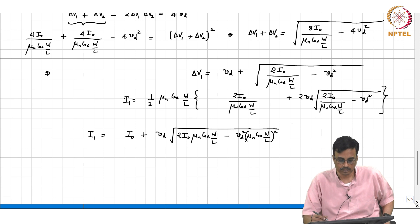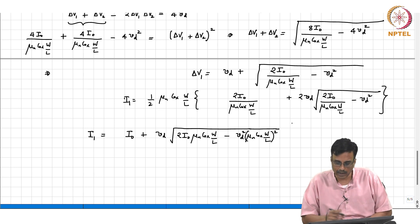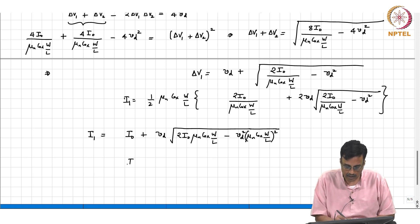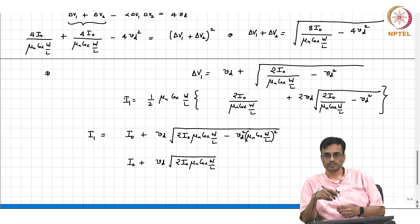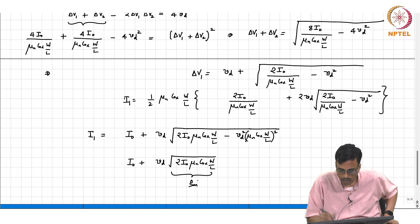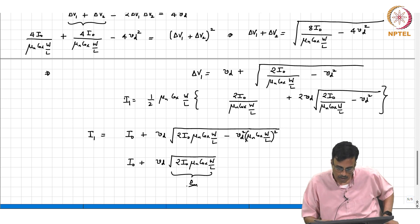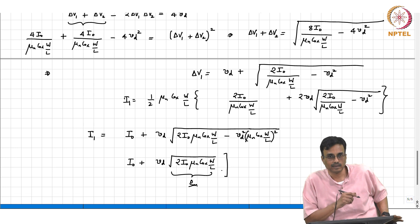Sanity check: Vd equals 0 gives I naught, right. What else can we do? For small Vd, which term can you neglect? You can neglect the Vd square. For small Vd we should get I naught plus Vd times something. What we actually get is this mu n Cox W by L, and why does this make sense? This is nothing but gm at the operating point. This is just a sanity check, this makes sense.